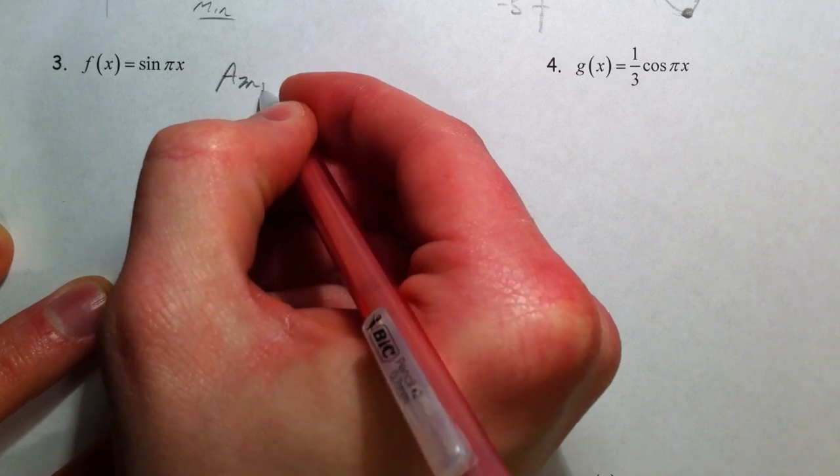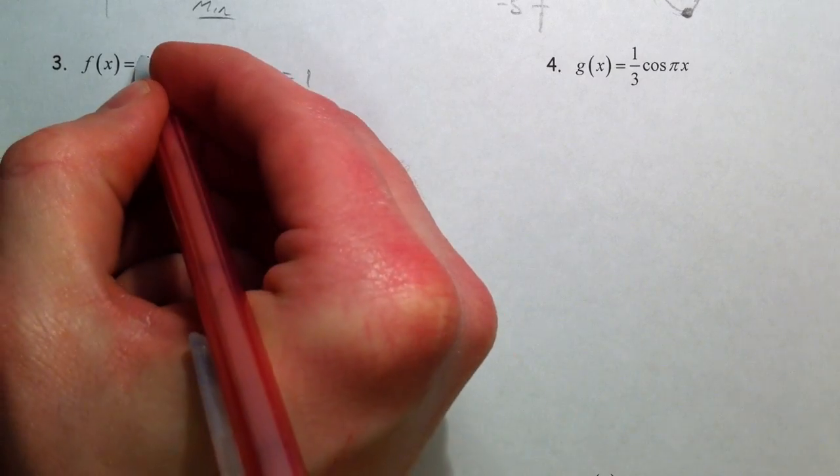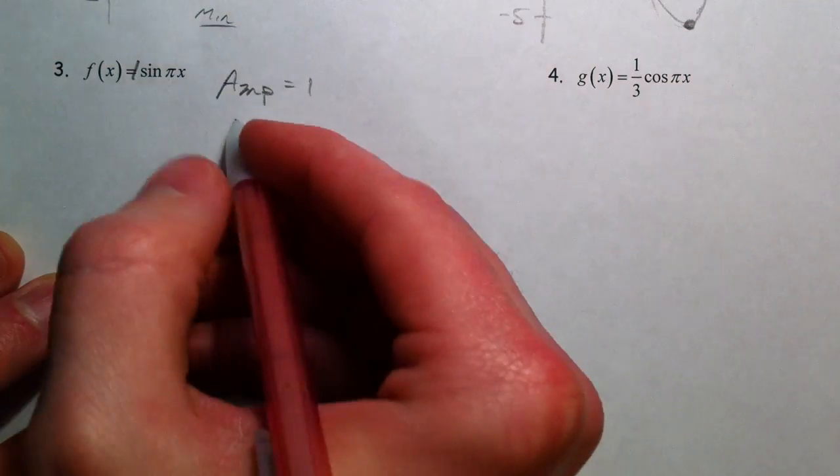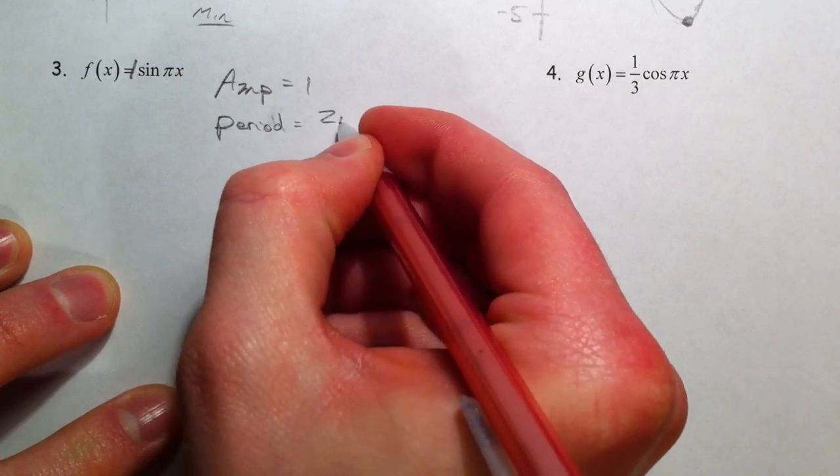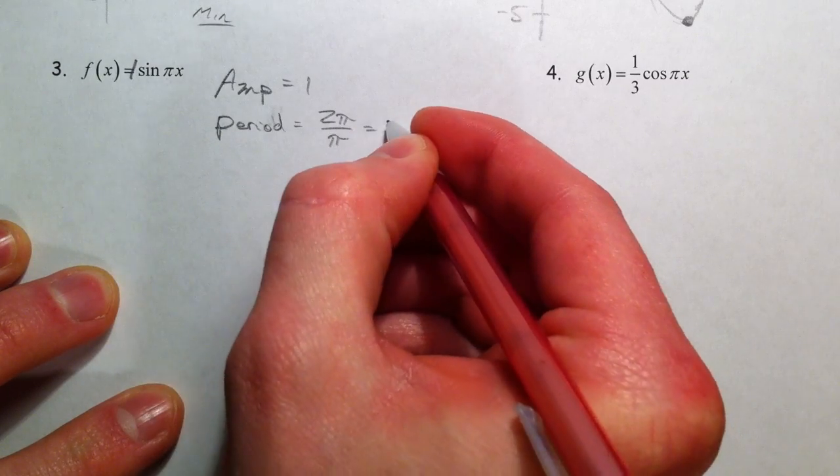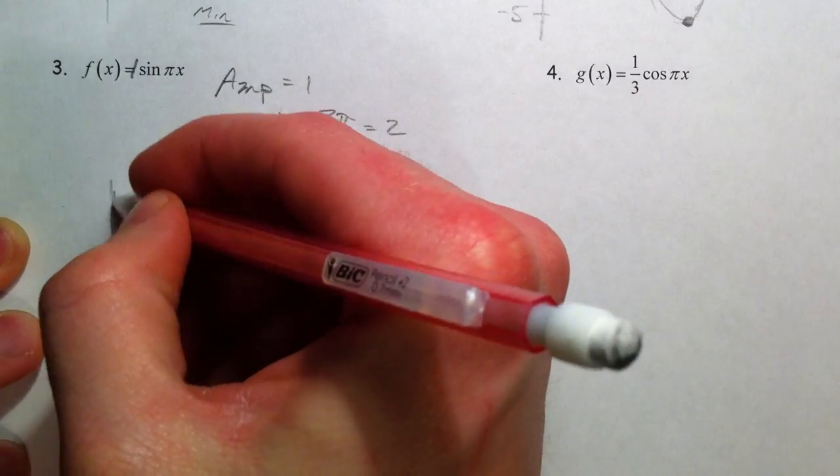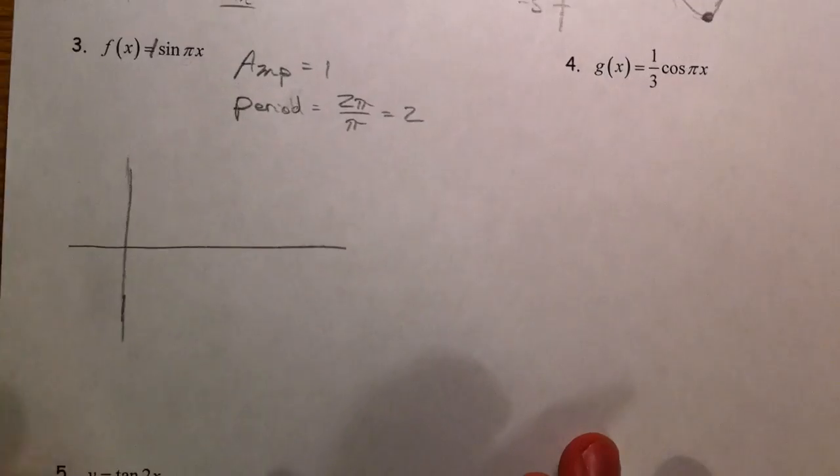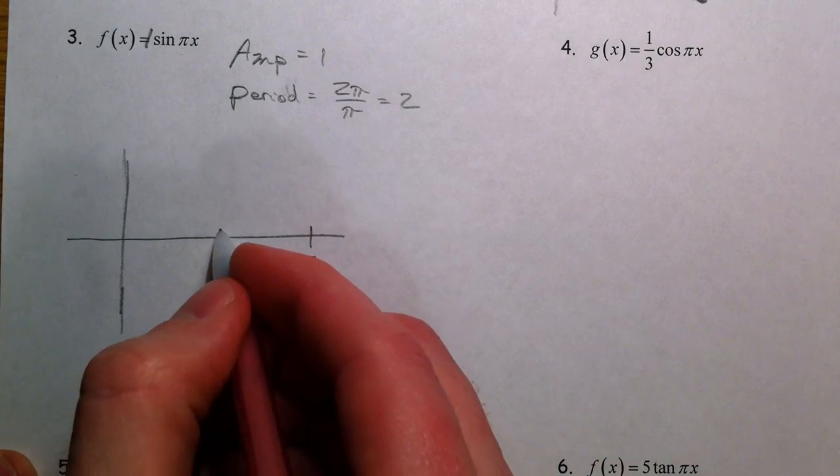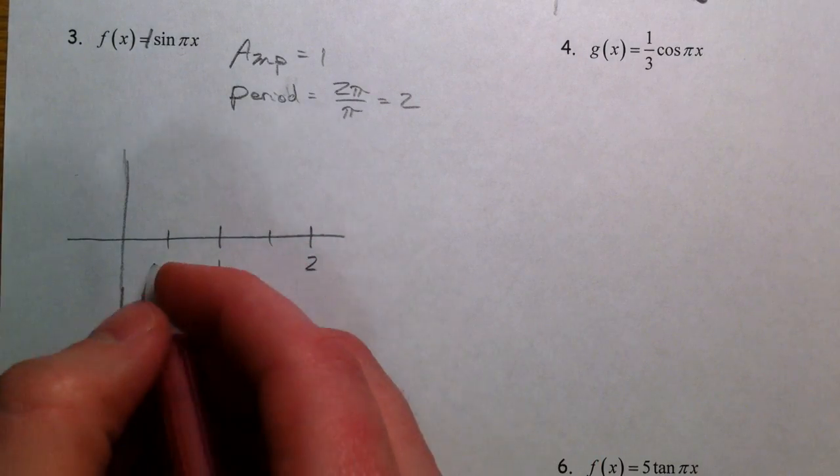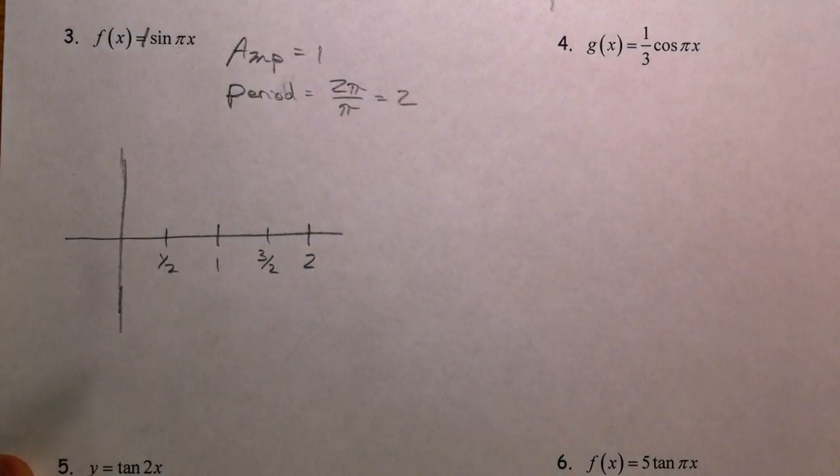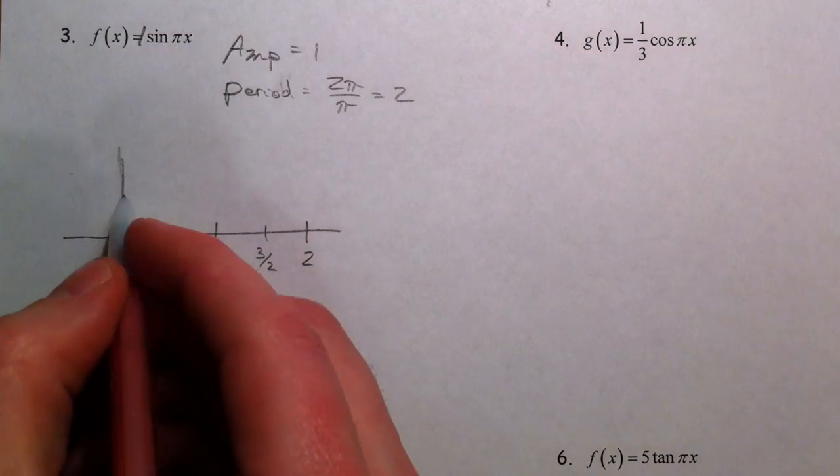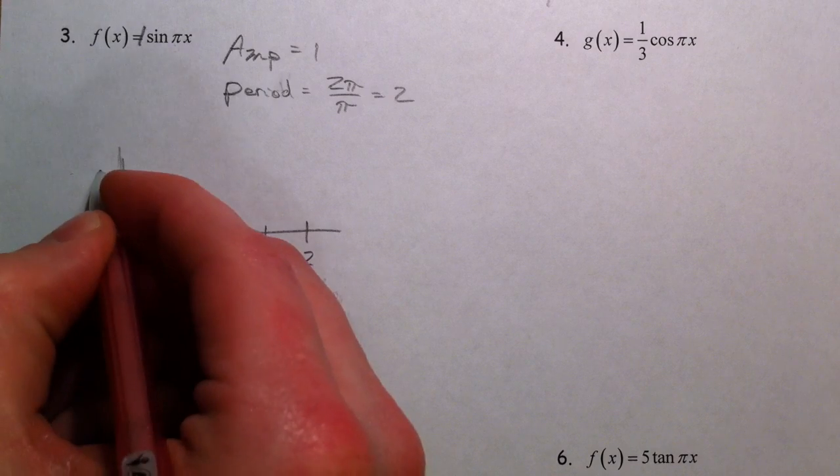So, my amplitude is still 1. Because that's 1 out in front. No number out in front. The period is going to be 2π. The original period now divided by π. And so my period is going to be 2. So, when I go and graph my function, I'm going to label 2. I'm going to label half of that. I'm going to label half of that and half of that. So we have 1 half and 3 halves. Or 0.5 and 1.5. The amplitude is 1, so I'm going to make it go up to 1 and down to negative 1.